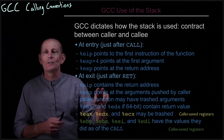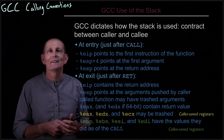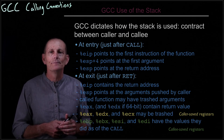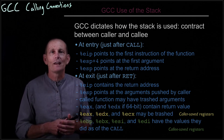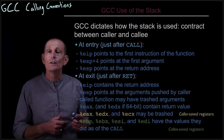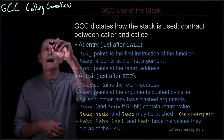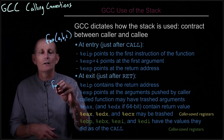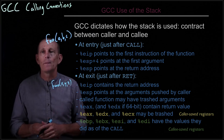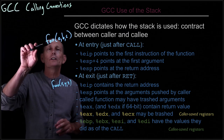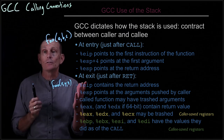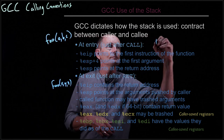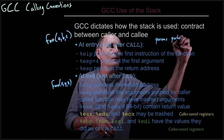At exit, EIP contains the return address — that's how we start executing after the return of the call. Second, ESP points at the arguments pushed by the caller. That's something that could be done differently; in other languages and other systems it has been done differently. The parameters are pushed right to left.